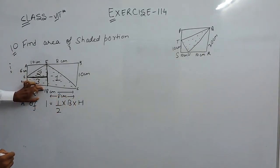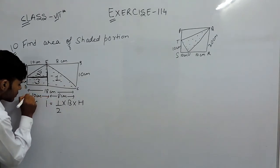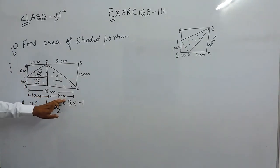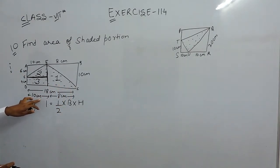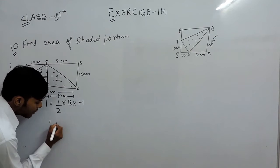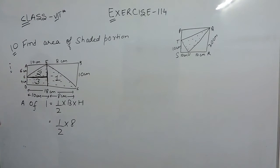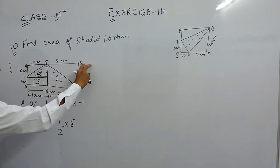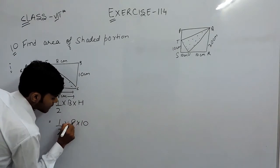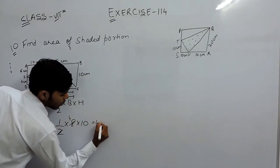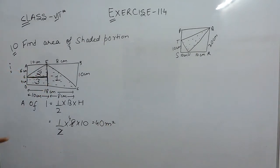And the height of the rectangle is 10 centimeters. The base of the triangle is 8 and the height is 10 centimeters. So that will be equal to 1/2 multiplied by base 8, multiplied by height 10. The 2 gets cancelled and that is equal to 40 square centimeters. This is the area of figure 1.